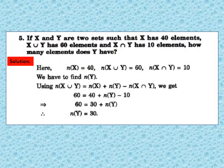Question 5: if X and Y are two sets such that X has 40 elements, X union Y has 60 elements and X intersection Y has 10 elements, how many elements does Y have? NX equals 40, NX union Y equals 60, NX intersection Y equals 10. Using the formula: 60 equals 40 plus NY minus 10. After simplification, NY equals 30. So the number of elements in Y is 30.